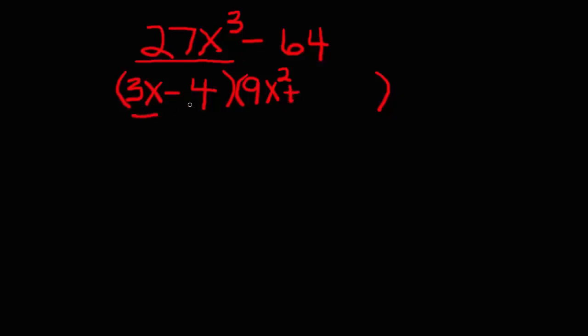Multiply the first and second terms together, 3x times 4 is 12x. Notice I ignored the sign, because I had already made that decision by making the opposite sign. The last sign is always positive, so just put a plus there. And square the last term, 4 times 4 is 16.